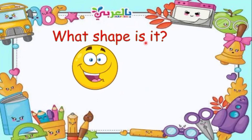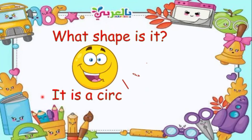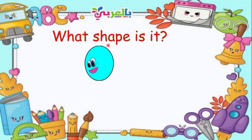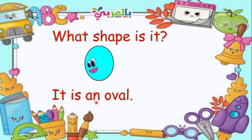Next, what shape is it? It is a square. What shape is it? It is a circle. Again, it is a circle. How about this one? What shape is it? It is an oval. Again, it is an oval.